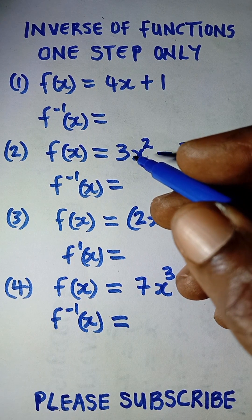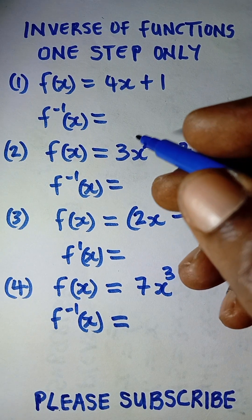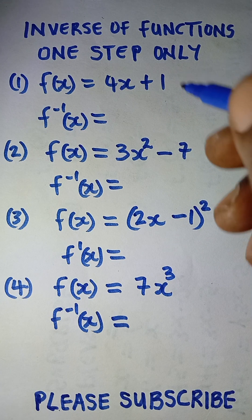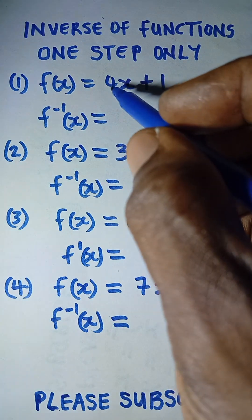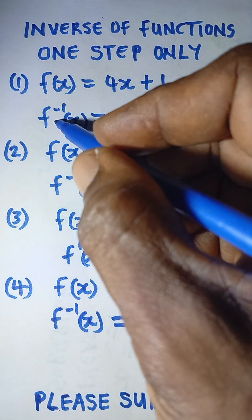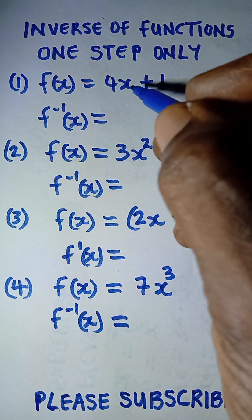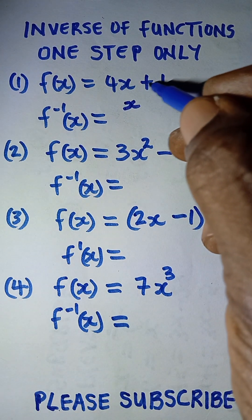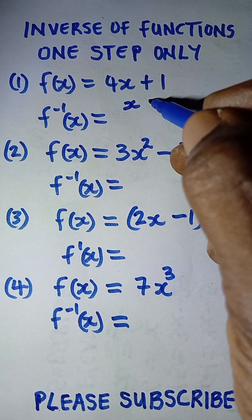Let us look at a one step trick on how to get the inverse of functions directly. Anytime you see a function like this, to get the inverse of that function, what you just need to do is take the x here and then change the sign here. If it's plus, it becomes minus, then one, all divided by the value that is here, number four.